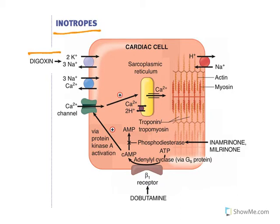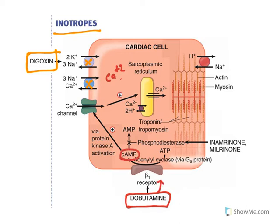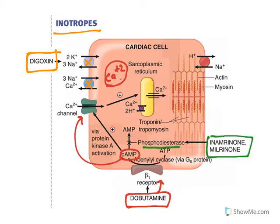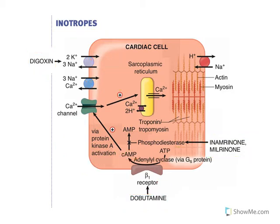To compare all inotropic agents: digoxin inhibits the sodium-potassium pump, which inhibits the sodium-calcium exchanger, increasing intracellular calcium. Dobutamine, a beta agonist, binds to the beta receptor, increases cyclic AMP, phosphorylates the calcium channel, and increases calcium. Phosphodiesterase inhibitors like inamrinone and milrinone inhibit cyclic AMP metabolism, increasing cyclic AMP, which phosphorylates the calcium channel and again increases calcium levels. All these increased calcium levels increase calcium release from the sarcoplasmic reticulum.